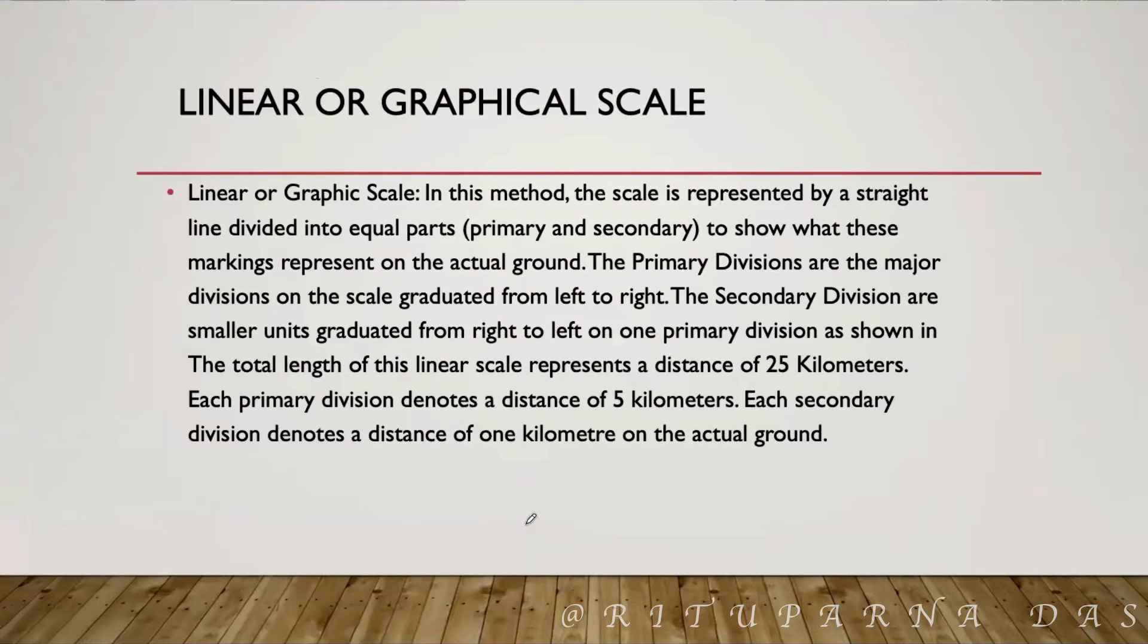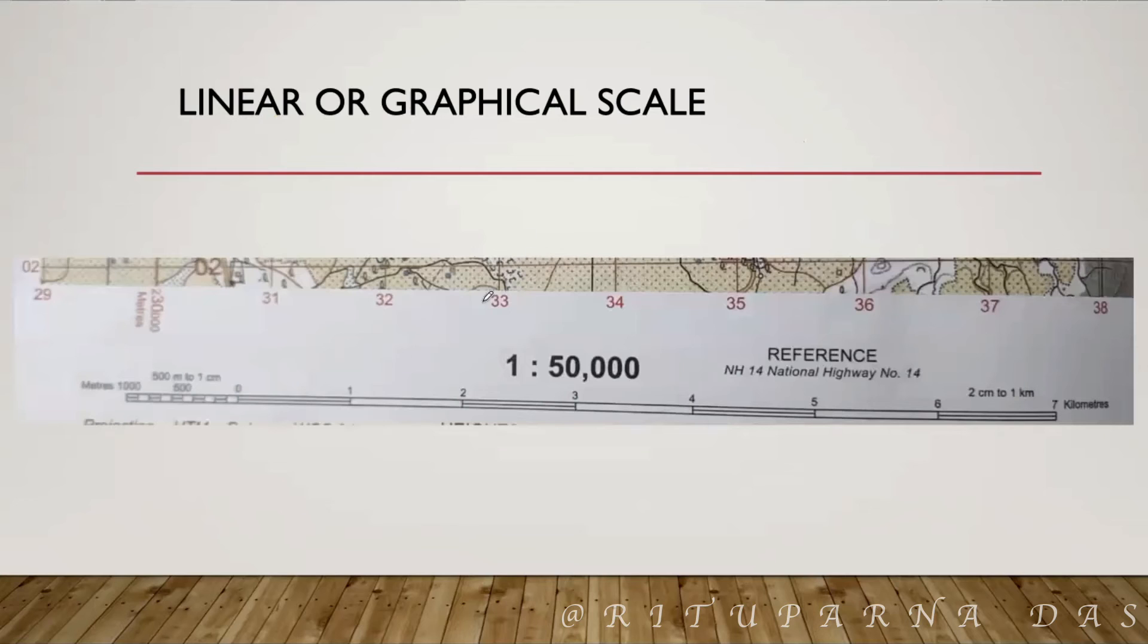Now, the third one is the linear scale. The linear scale is also known as graphical scale. You will see in the topographical map, a straight line or a ruler kind of things will be drawn, and the numbers will be also written. You have to identify the scale from this straight line. Let's identify from the topographical map. This is the linear scale or the graphical scale.